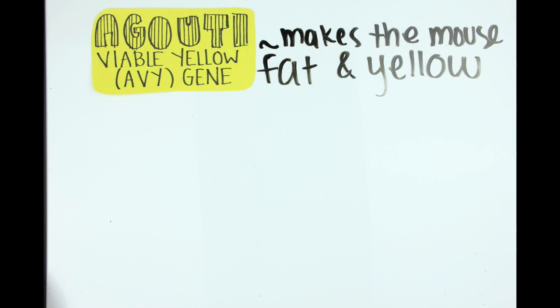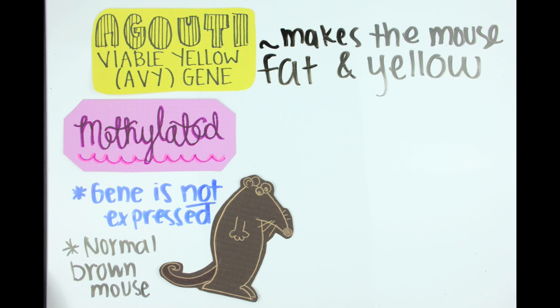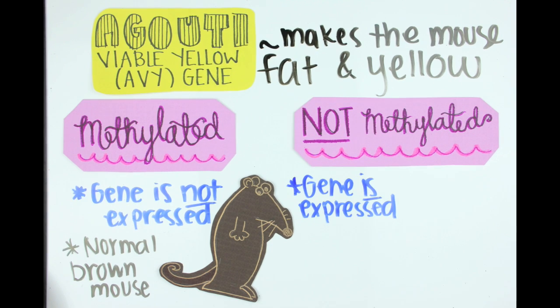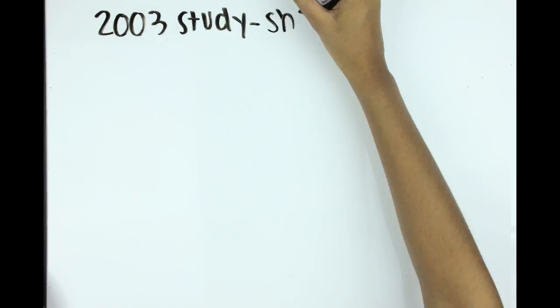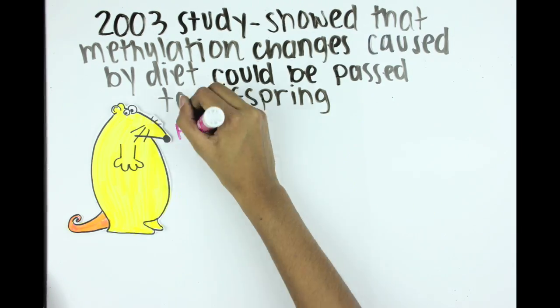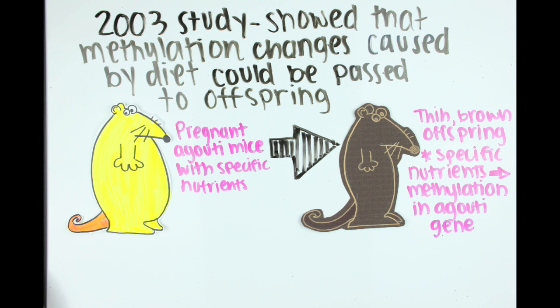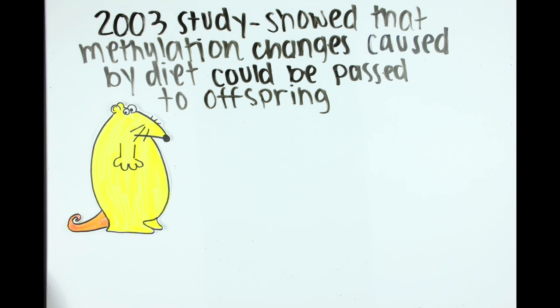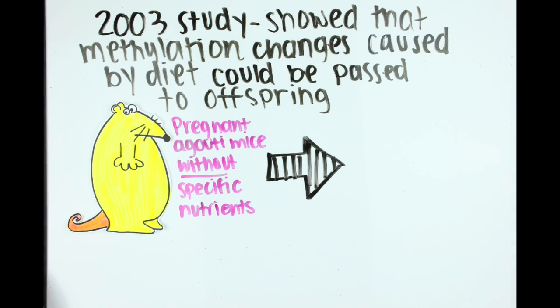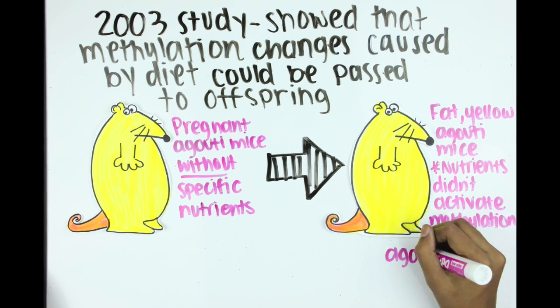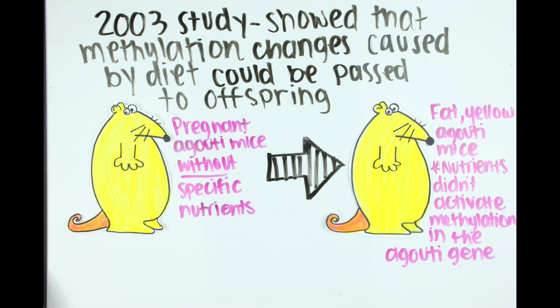A great example is the agouti mouse. The agouti viable yellow gene is one that makes a mouse fat and yellow. All mice have it, but when it's methylated, the gene isn't expressed. This is the normal condition. But if the gene isn't methylated, it stays on. In a 2003 study, scientists fed pregnant agouti mice specific nutrients in their diet. When the mothers gave birth, the pups were thin and brown because the nutrients activated methylation of the agouti gene. Scientists fed the control group with a placebo diet, and the mothers gave birth to agouti pups because these different nutrients didn't activate methylation.